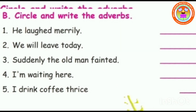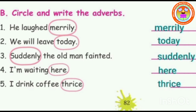Section B: circle and write the adverbs. See the sentences. He laughed merrily. We will leave today. Suddenly, the old man fainted. I am waiting here. I drink coffee thrice. Answers: merrily is an adverb. Today is an adverb. Suddenly is an adverb. Here is an adverb. Thrice is an adverb.